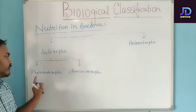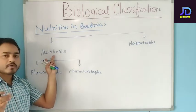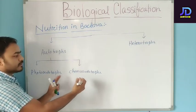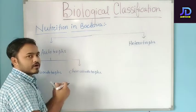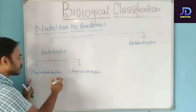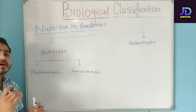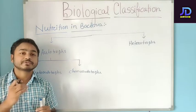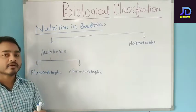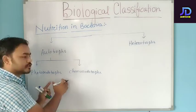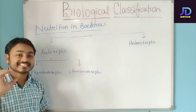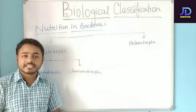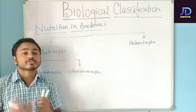The photo-autotrophs: if the bacteria can produce their own food with the help of solar energy, that bacteria will be called photo-autotrophs. Photo means from the word photon — sunlight. You know that in case of green plants or eukaryotes, the process is known as photosynthesis.